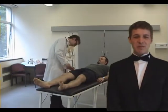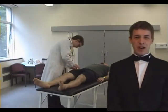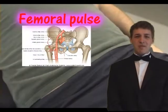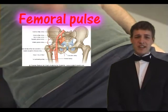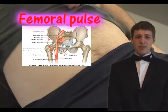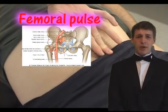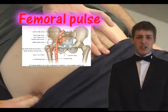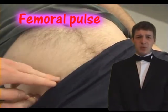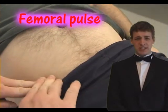Now assess the peripheral pulses of the lower limb. The femoral pulse is located just below the mid-inguinal point, which is halfway between the pubic symphysis and the ASIS.